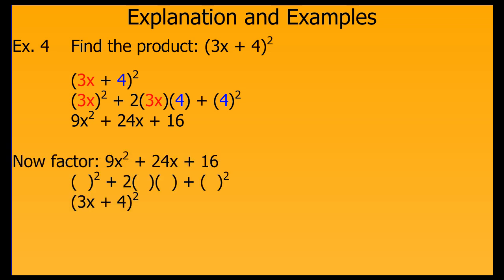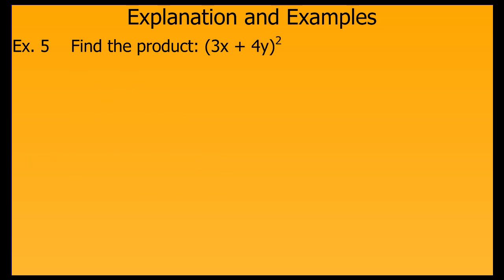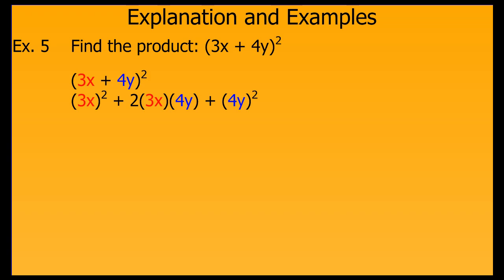Let's go right to factoring so we can see the connection. Look at that for a few seconds to see the relationship between the product and the factors. Another example, this time with coefficients and variables in both terms, but it works the same way. We're going to square the first term, do twice the product in the middle, and then square the last term. We get this for our product.